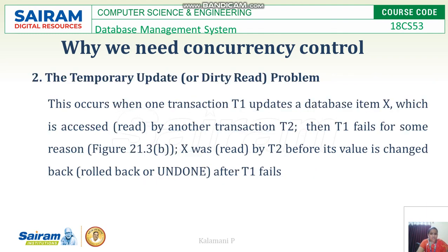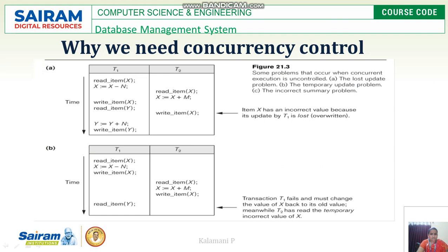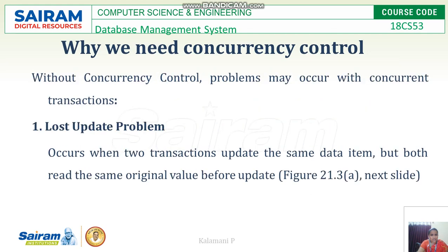For example, transaction T1 reads item X, transaction T2 also reads item X, then T1 writes item X, and again T2 writes item X. Both transactions try to read and write the value X — this is the problem called the lost update problem.